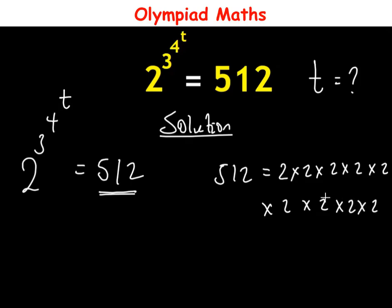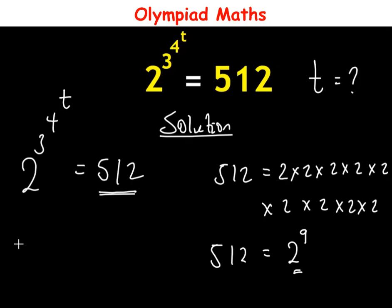If we multiply all those factors of 2, what we get is 512. So therefore 512 is equal to 2 raised to power 9 — that is 2 in 9 places. So in place of 512, we bring in 2 raised to power 9, so this becomes 2 raised to power 3 raised to power 4 raised to power t is equal to 2 raised to power 9.